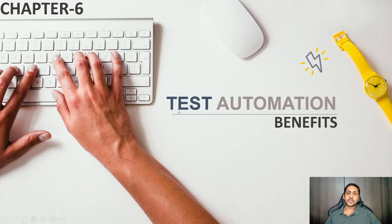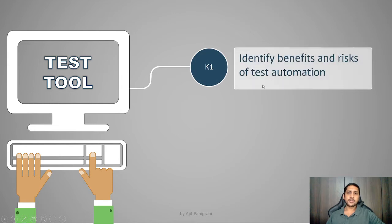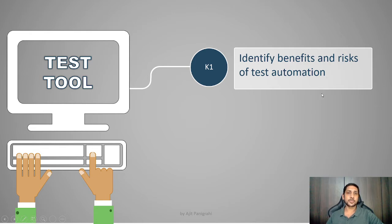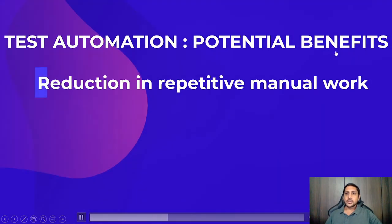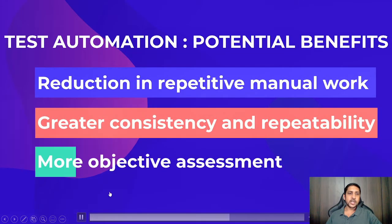Now we will have a look into the third topic, that is Test Automation Benefits. It is a straightforward topic. It is K1, so if you get a question it will be direct from this topic — identify benefits and risks of test automation. First we will see the benefits, and after that we will see the risks associated with the test automation process.